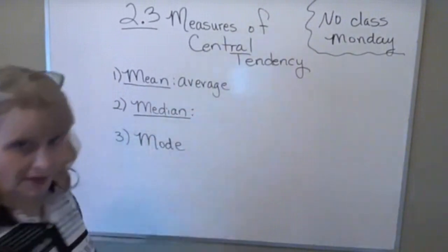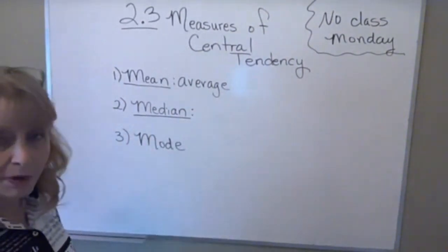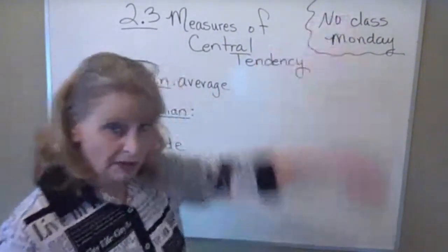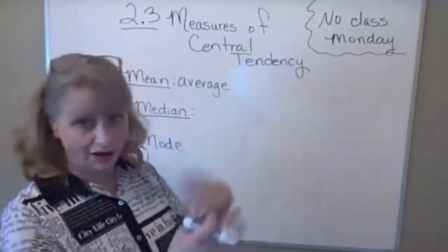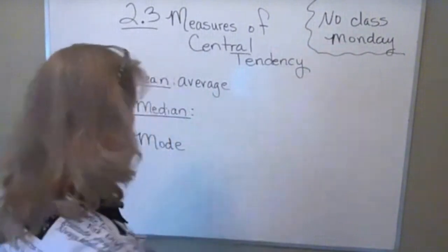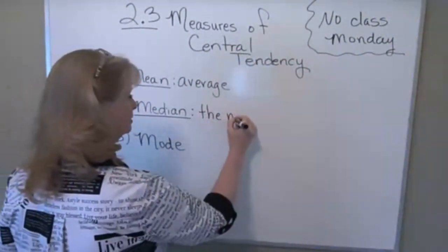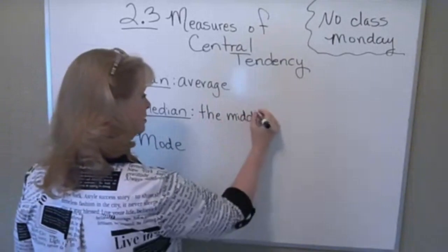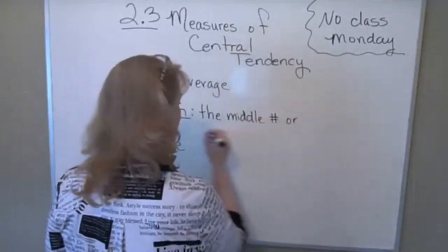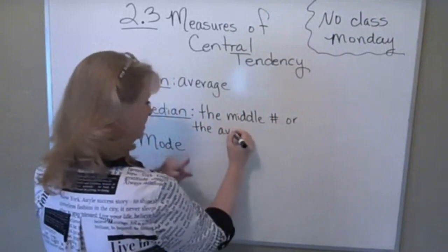The median — I already told you it will be the number in the middle, but it's the number in the middle when you put them in order. Otherwise a different number would be the median. So this is the middle number, or the average of the two middle numbers when there are two in the middle.